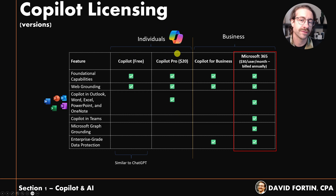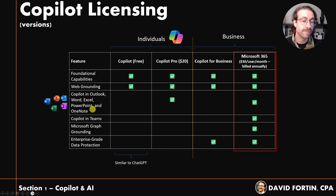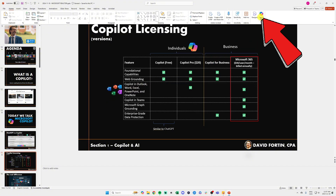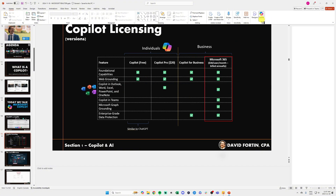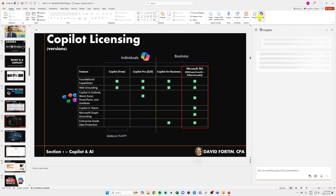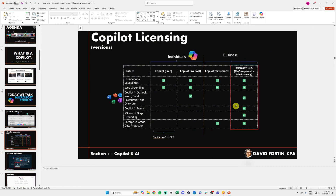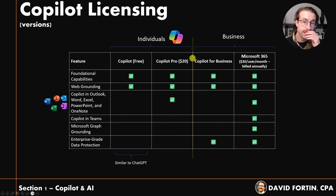Then you have Copilot Pro, which is also for individuals. If you pay $20 a month, you're going to be able to unlock Copilot in Outlook, Word, Excel, PowerPoint, and OneNote. This is actually my PowerPoint — I click on Copilot and this is the Pro version. It unlocks a button at the top of all your files in those tools. This is what you get when you pay for the Pro version as an individual.